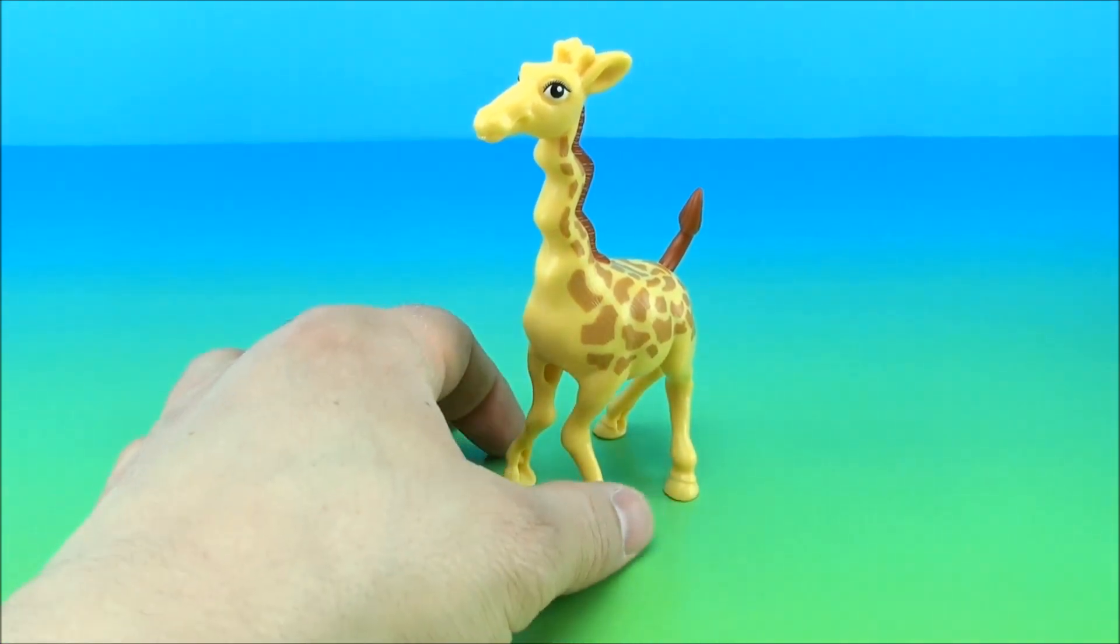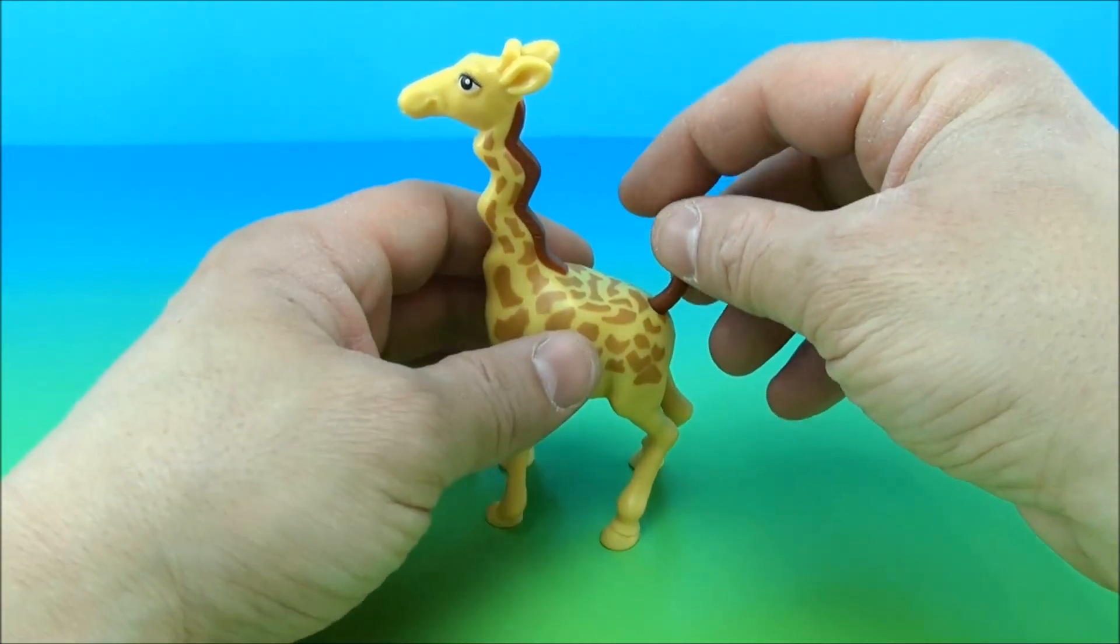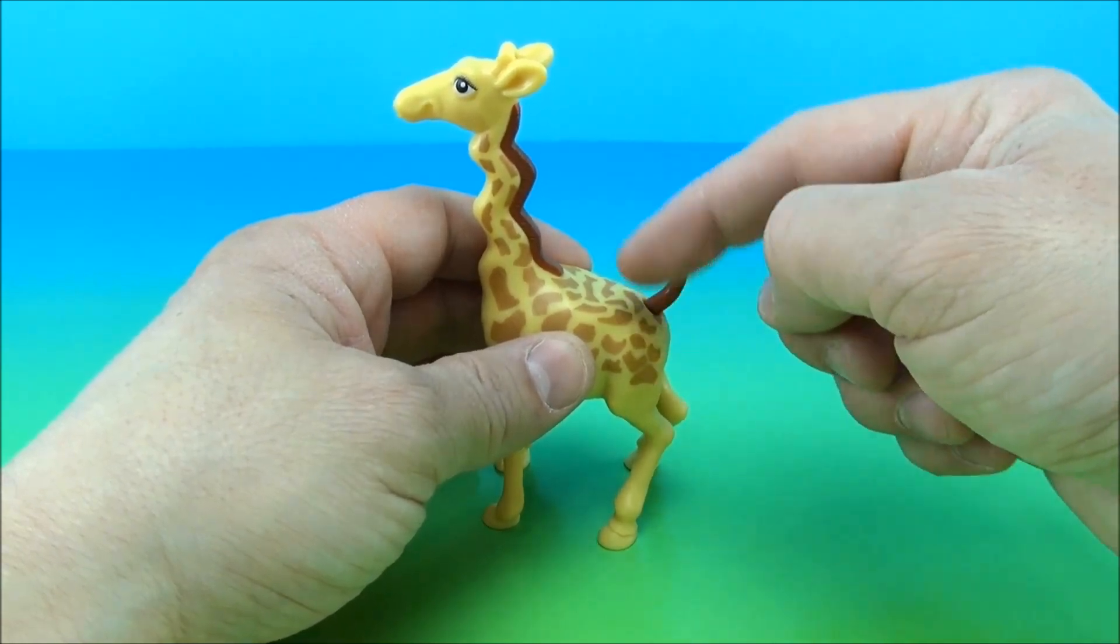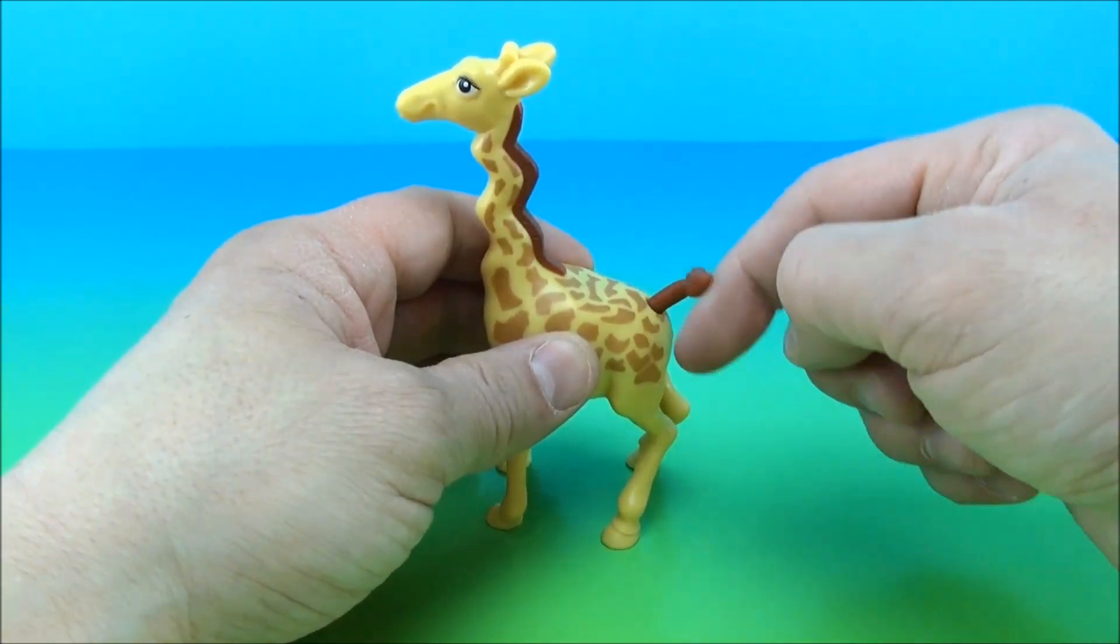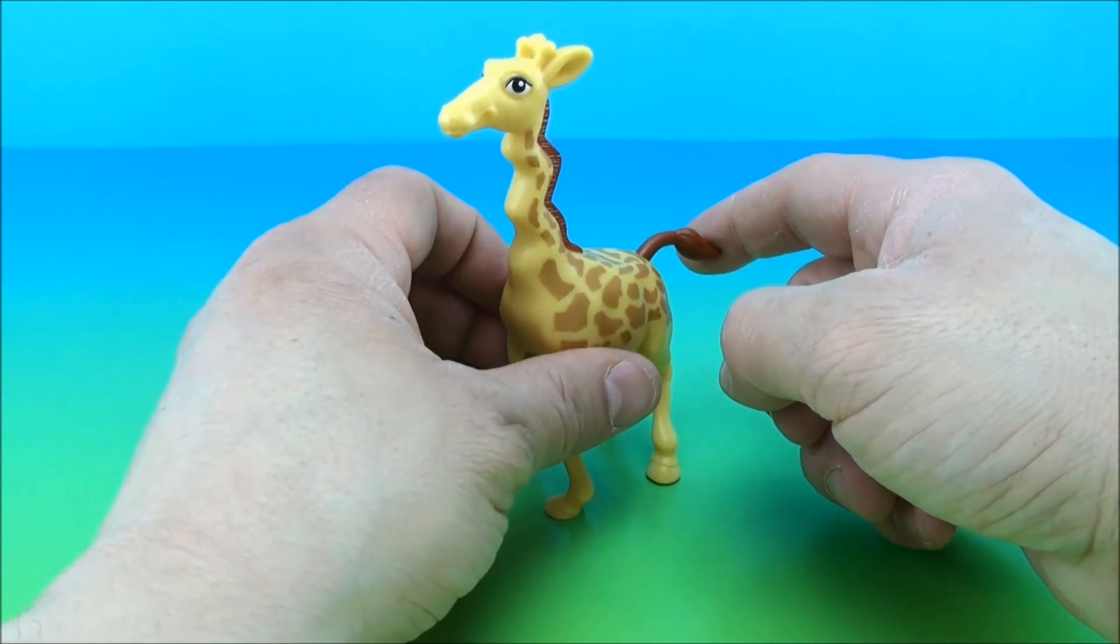Next, we have Bridget, the giraffe. And what you're supposed to do with her is just kind of twirl her tail around a little bit, and she's supposed to get all shakety-legged. So let's see what that does.